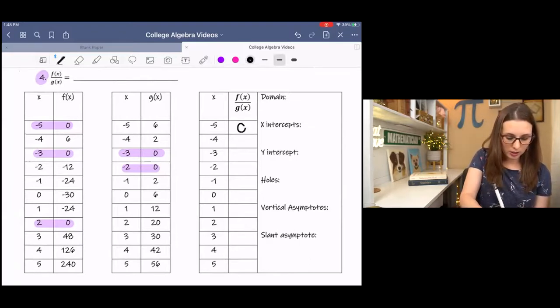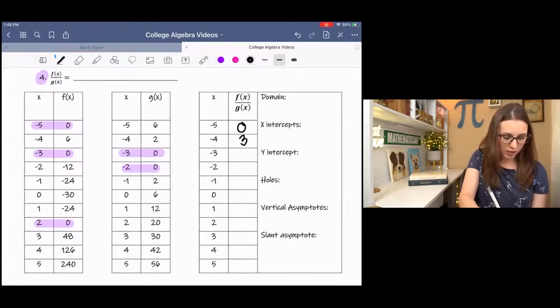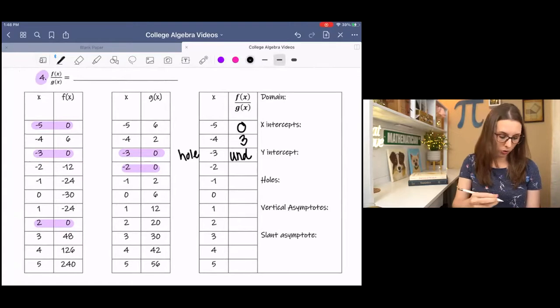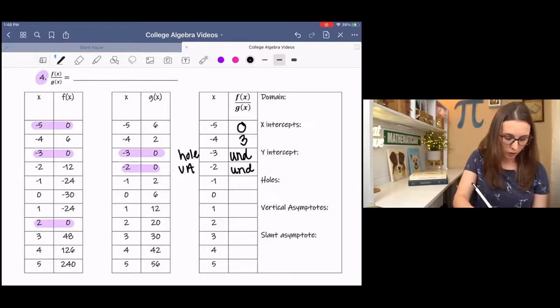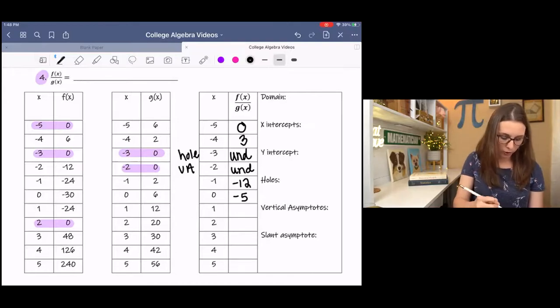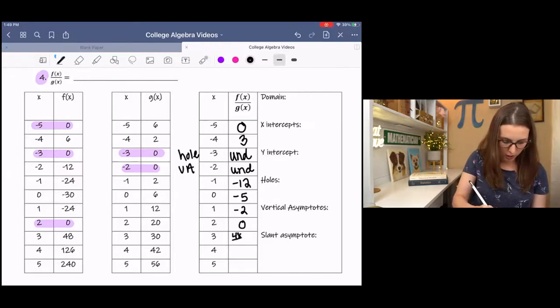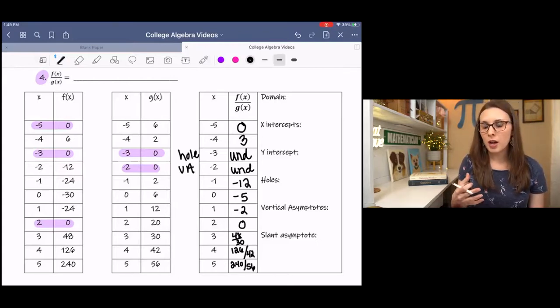0 over 6 is 0. 6 over 2 is 3. 0 over 0 is undefined, more specifically a hole, because of 0 over 0. And then negative 12 over 0 is undefined. That's going to be a vertical asymptote, negative 12 over 2, negative 30 over 6, negative 24 over 12, 0 over 20, 48 over 30. I'm just going to leave that for now. 126 over 42, 240 over 56. Now we can find the decimal numbers for those. They're just points on the graph. I don't necessarily need them right now.